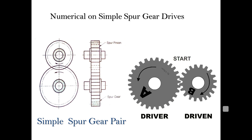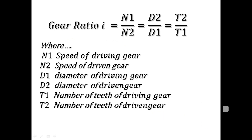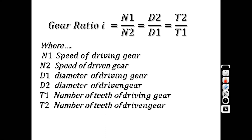We will be discussing a new term called gear ratio, also known as reduction ratio. Gear ratio is the ratio of input shaft speed to output shaft speed, expressed as n1 by n2 in rpm. To derive this formula, we start with the basics of circular motion: V = r·ω.